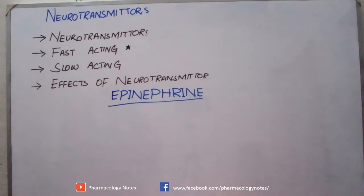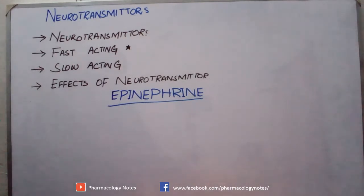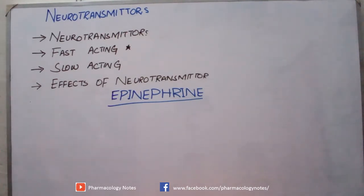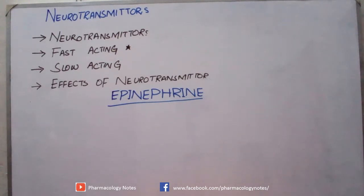We are studying about neurotransmitters. A neurotransmitter is a type of chemical used to communicate between nerve cell to nerve cell, and nerve cells to their effector cells. There are multiple types of neurotransmitters — some act very fast and some act slowly on their effector sites. Among these are epinephrine, norepinephrine, acetylcholine, glutamate, histamine, and gamma-aminobutyric acid.